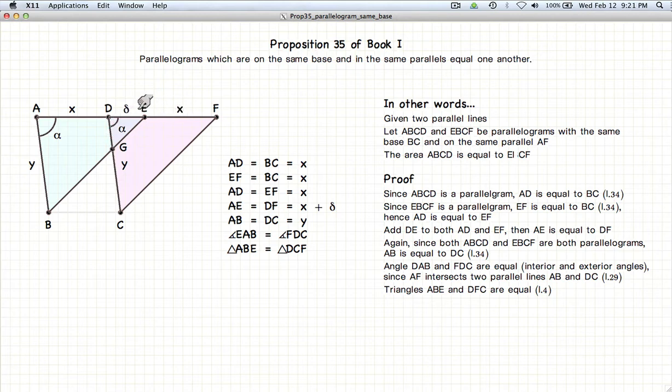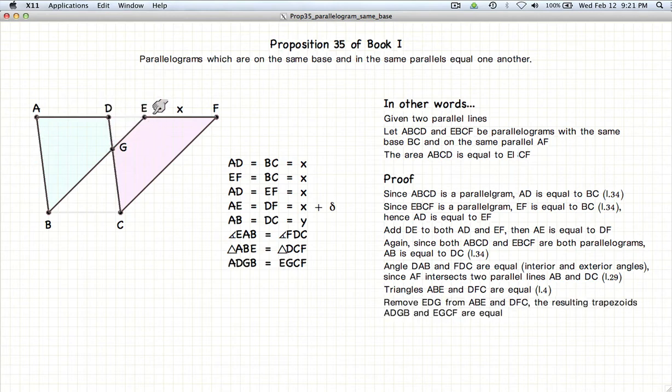Which means these two triangles are equal in all respects, including the areas. So if these two triangles are equal in area, if we subtract this little triangle DEG, the resulting polygons are also equal in area.